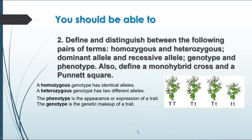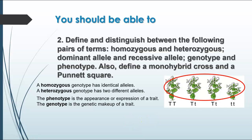You should be able to tell the difference between homozygous and heterozygous, dominant and recessive allele, genotype and phenotype — those are paired terms you should know the difference between. A homozygous genotype has two identical alleles. A heterozygous genotype has two different alleles. The phenotype is the physical expression of the trait — the appearance, like three tall plants and one short one. The genotype is the makeup of the trait, whether it's homozygous dominant, recessive, or heterozygous. A monohybrid cross is a cross between two heterozygous individuals for one trait.